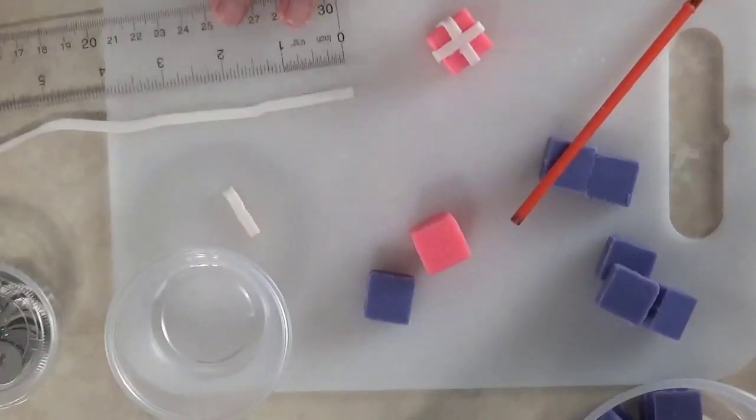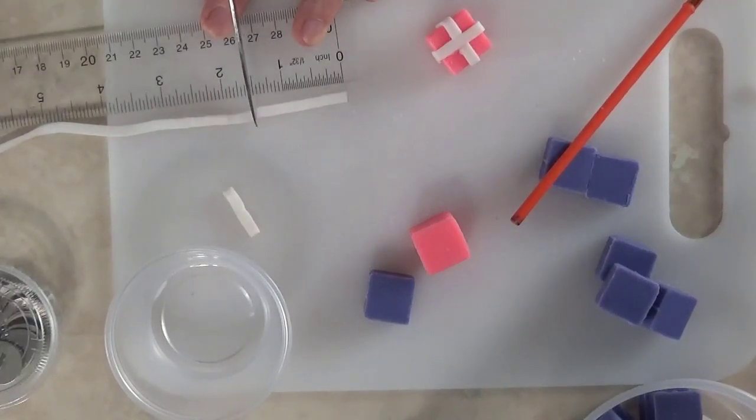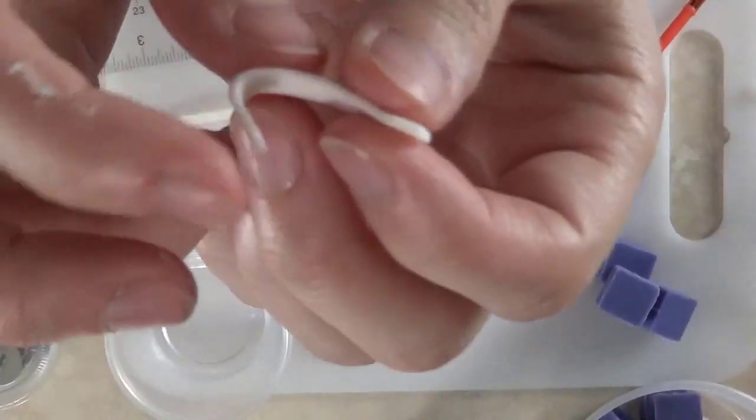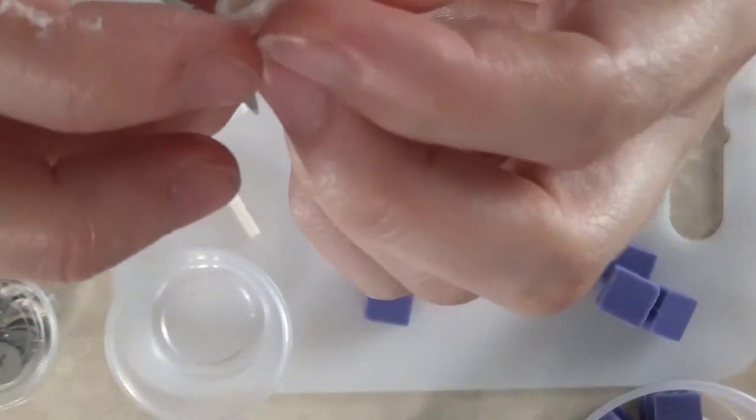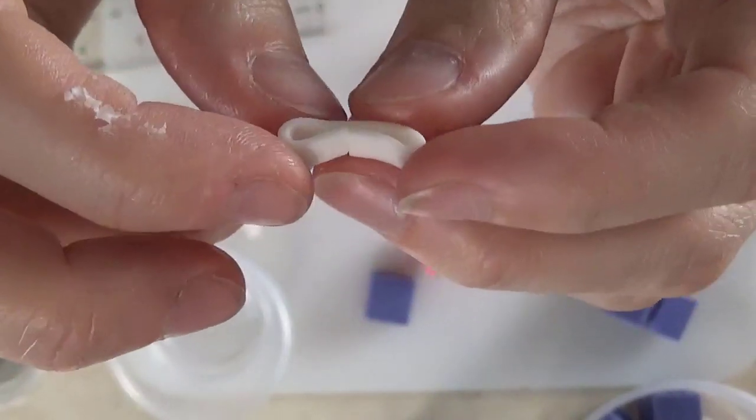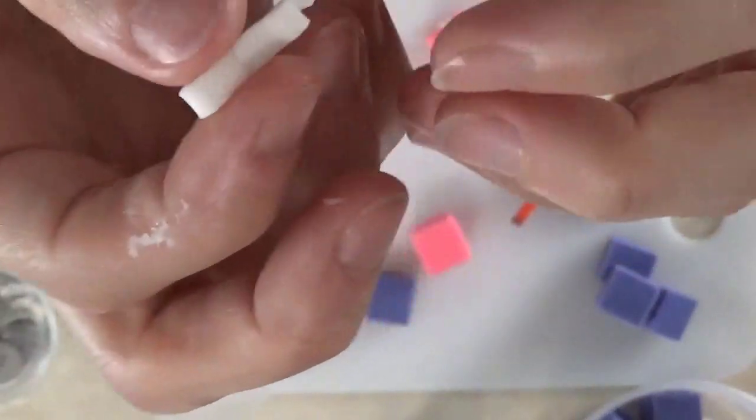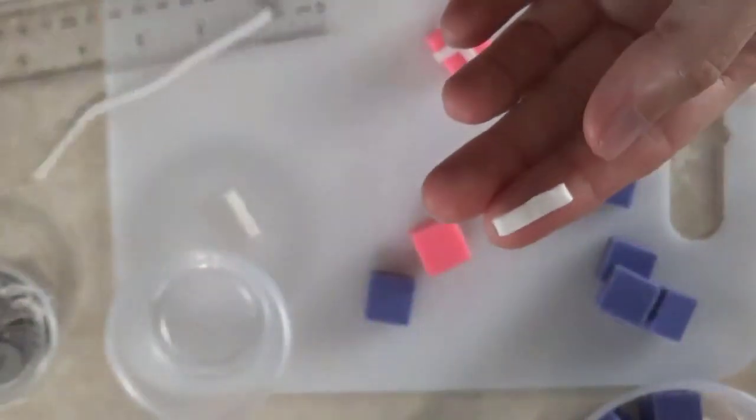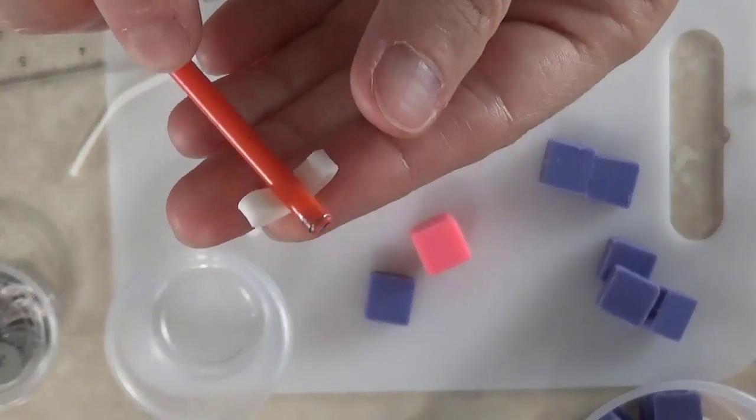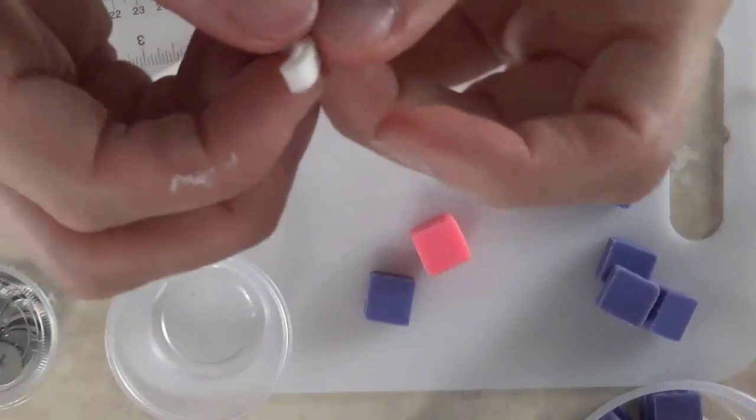So I usually keep this hole no more than about that big. I wasn't happy with this one. I cut it a little too long, so I did one and three quarters. We're going to do one and a half this time. Okay, so you see I've got them meeting in the middle.